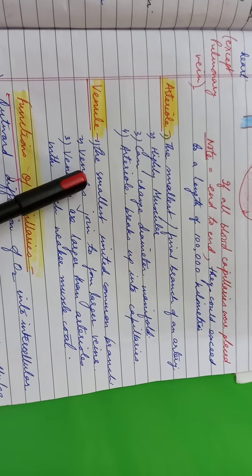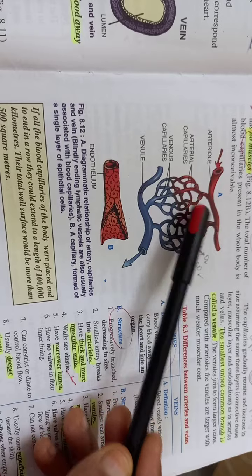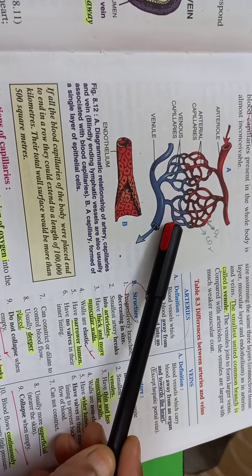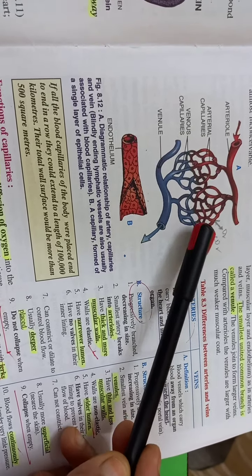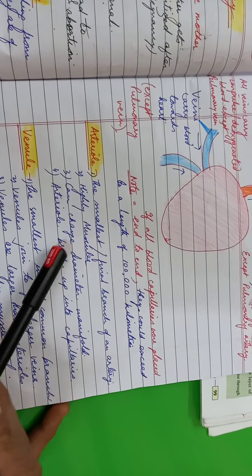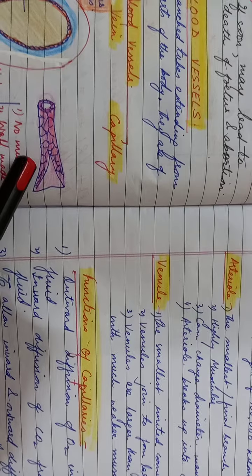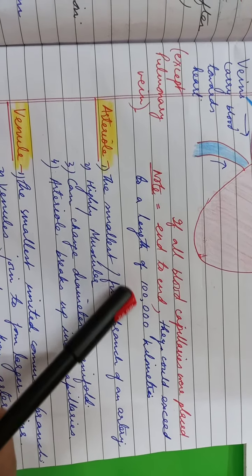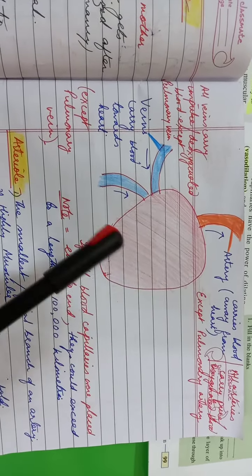Then what is a venule? It is the smallest united common branch. When arteriole is breaking up into the capillary, then the united branch which is further continuing to form the larger vein, this small structure, the blue ones, these are venules. Venules are larger in diameter than the arterioles with much weaker muscle coat. Then if all the blood capillaries of the body were placed end to end in a row, they could extend to a length of hundred thousand kilometers. It's a very high number to imagine.